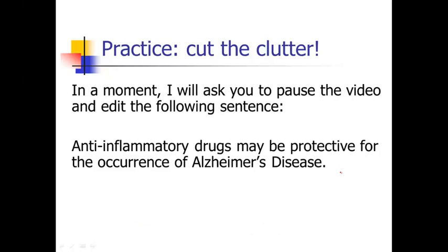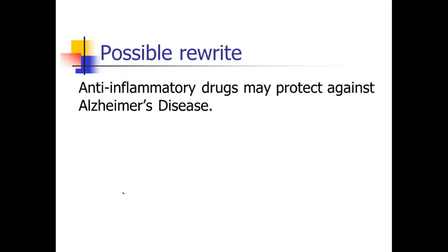So when I edited this sentence, I read it through and found 'may be protective for the occurrence of' to be quite wordy. So rather than 'be protective for,' how about just 'may protect against.' And then we don't really need 'the occurrence of.' We may protect against Alzheimer's disease — we don't need 'the occurrence of.' So: anti-inflammatory drugs may protect against Alzheimer's disease. Hopefully you had a similar rewrite; feel free to email if you've got a better rewrite to share with the class.